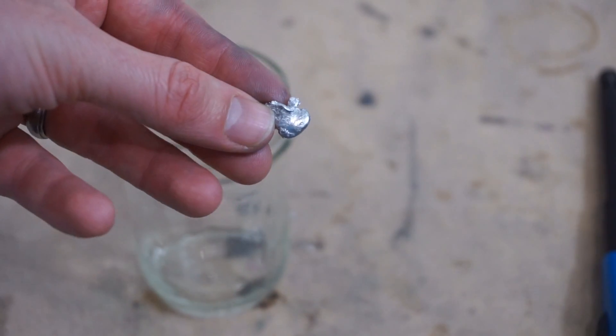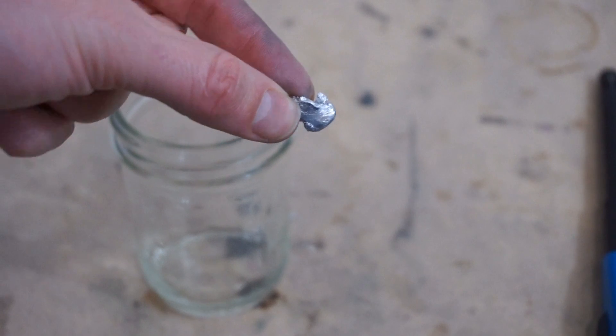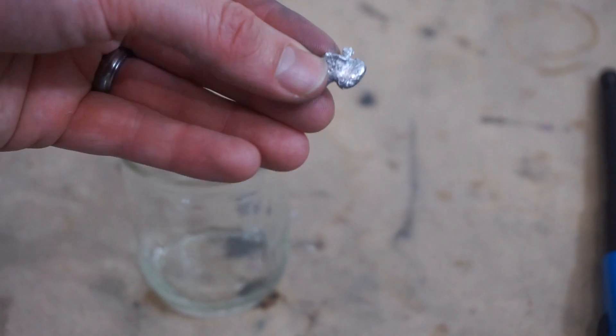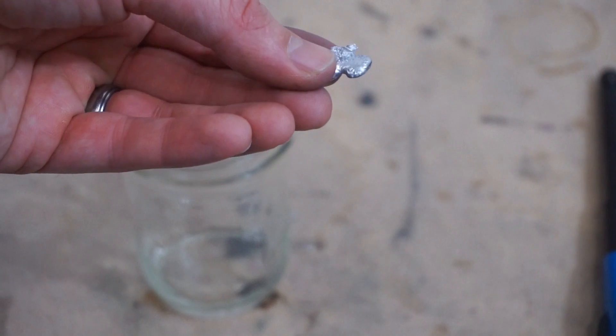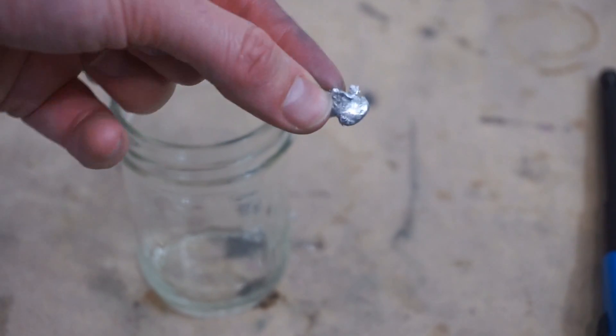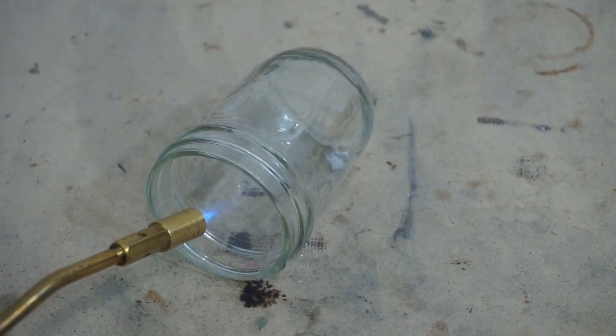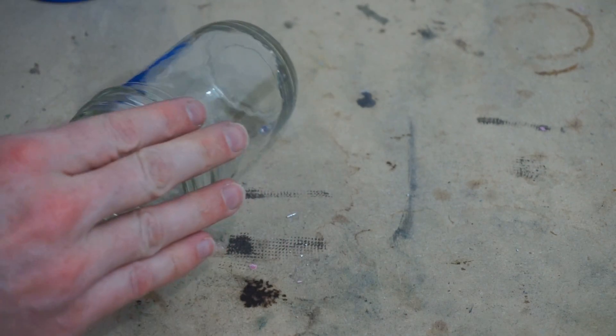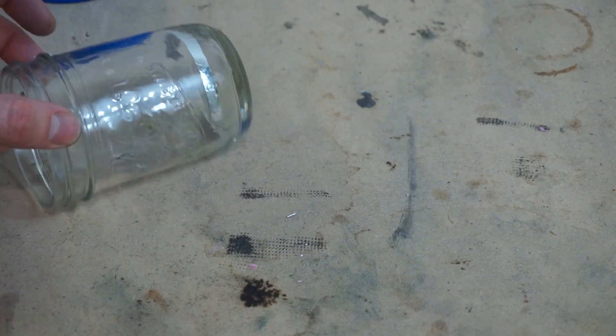Also indium is one of the few metals that wets glass. What that means is if you put it on a piece of glass, it doesn't bead up, but it sticks to the glass. That means you can make really cool mirrors with it. Hey, there I am.